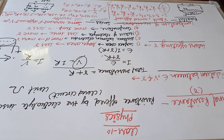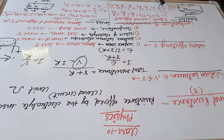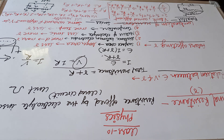In parallel combination, all resistors are joined from the same fixed points individually, so they have the same potential difference but different currents. The net current is I = I1 + I2 + I3. Applying I = V/R, and since V is the same, we get 1/R = 1/R1 + 1/R2 + 1/R3. Watch the video carefully and try to solve numericals based on series and parallel combinations.